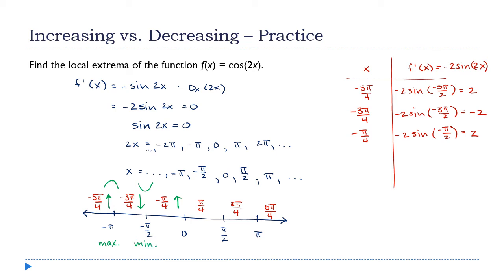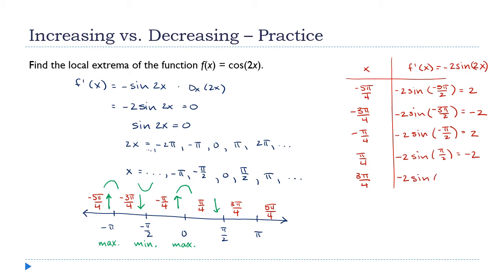At x = π/4: f′ = −2 sin(π/2) = −2 — decreasing. The function goes up then down at x = π/2, so that's a maximum — just as we expect from the sine function alternating. At x = 3π/4: f′ = −2 sin(3π/2) = positive 2 — increasing. So at x = π the function goes down then up: that's a minimum.